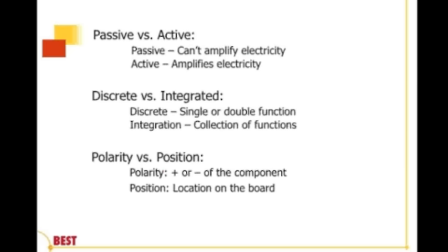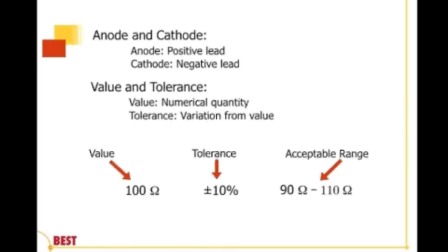Then we have polarity versus position. Polarity is important where the orientation of the component makes a difference as to how it functions. For instance, electrolytic capacitors have both a positive and negative lead, and the device in the circuit only works one way — the positive lead goes in the correct plated through hole and the negative lead goes in the correct plated through hole. Then there's position. When we have symmetrical devices, especially multi-leaded devices, we need to know where the first pin and last pin are to connect to the right parts of the circuitry.